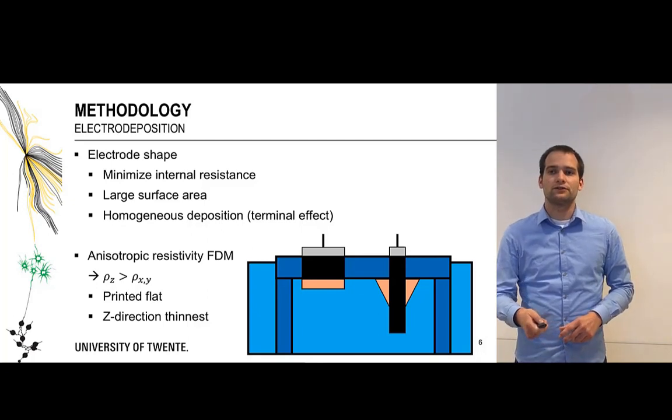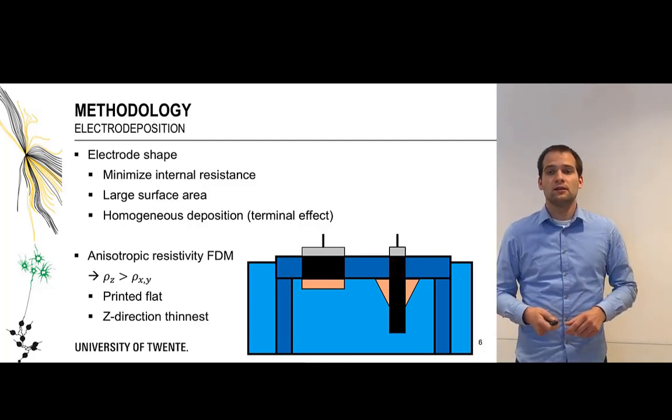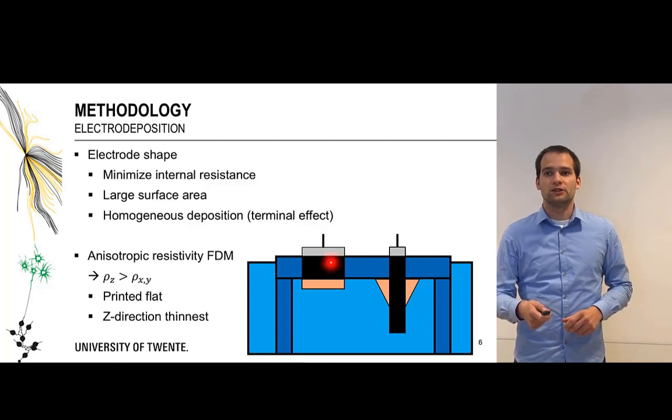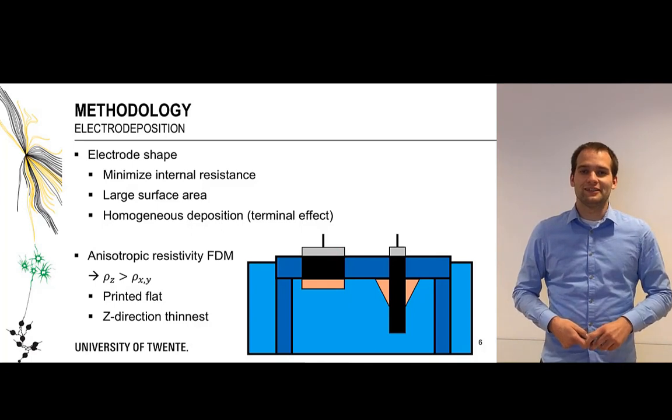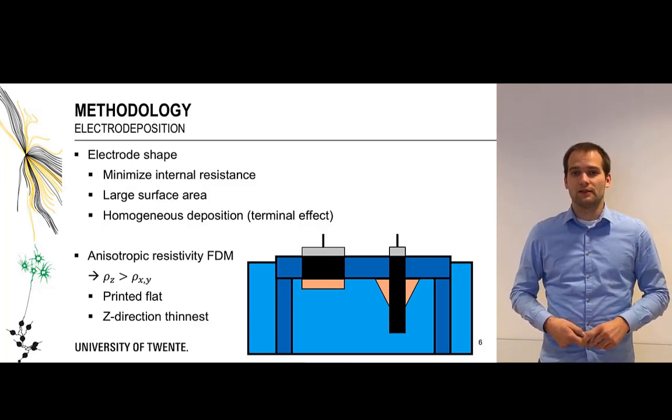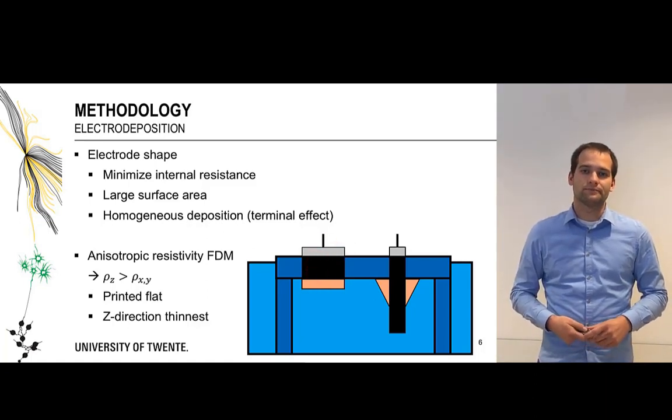Furthermore we have printed our electrodes laying down flat on the print bed since fused deposition modeling introduces anisotropy in the printing and in the z direction the resistivity becomes the highest actually, so we've taken the z direction very thin and laying flat.